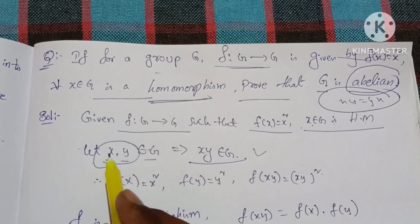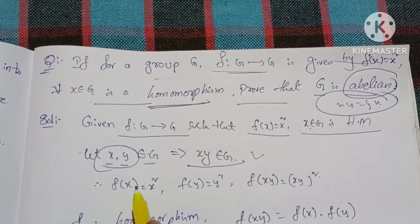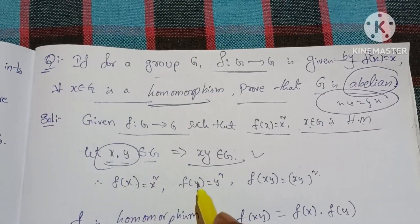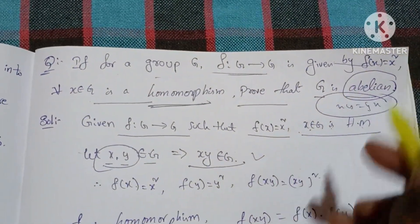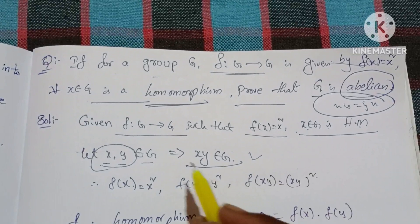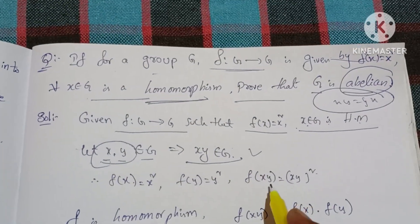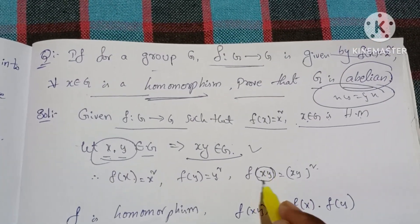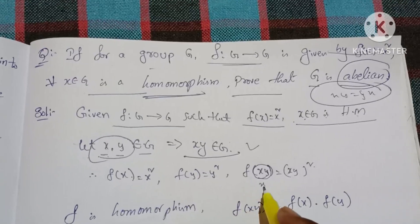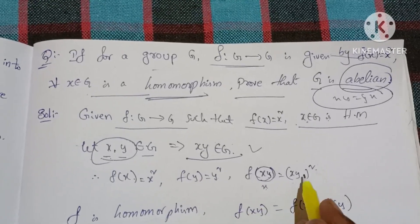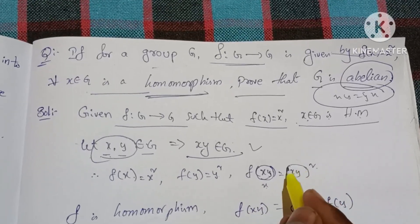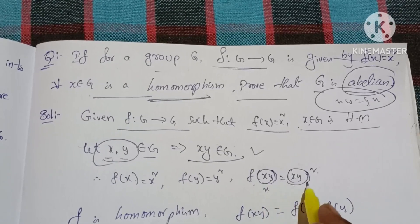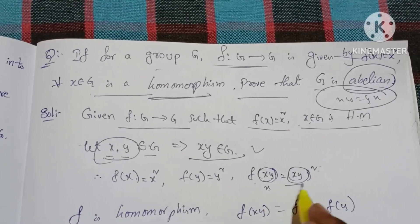Let f(x) = x², f(y) = y², and f(xy) = (xy)², since f maps each element to its square. Therefore, f(xy) = (xy)².